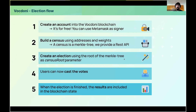I'll briefly explain the election flow, and Marc will dig deeper into this in the workshop. First, you need to create an account in the Vocdoni blockchain — a native account in our blockchain. You can use MetaMask as a signer or use the SDK directly. Once you have this account, you can build a census to specify who is able to vote by using addresses and weights, and the census is stored as a Merkle tree. Then you can create an election and customize it with different parameters — all the complexity is abstracted by the SDK.